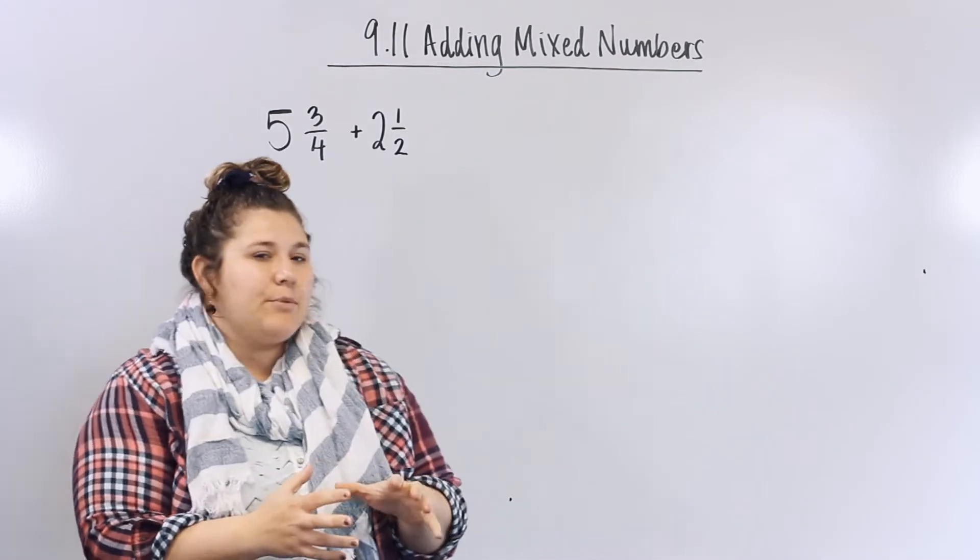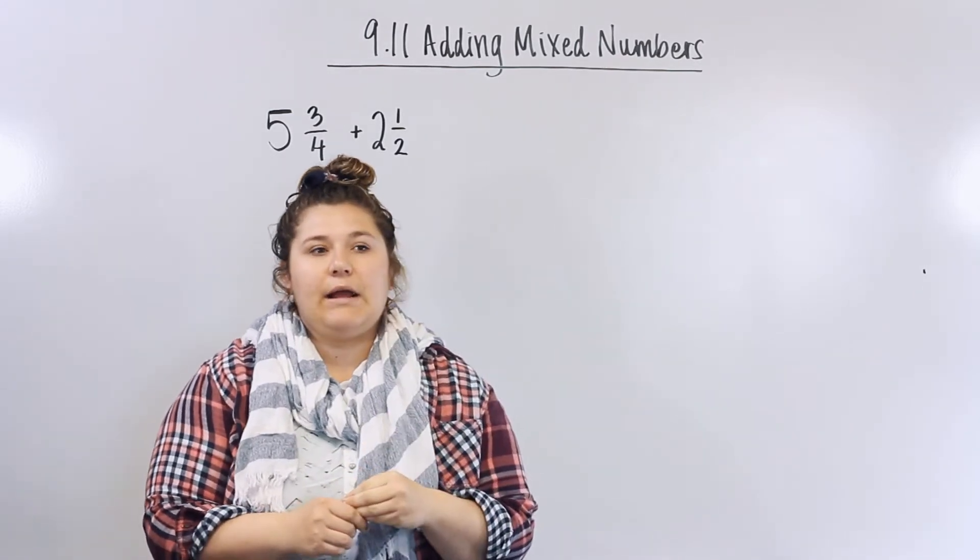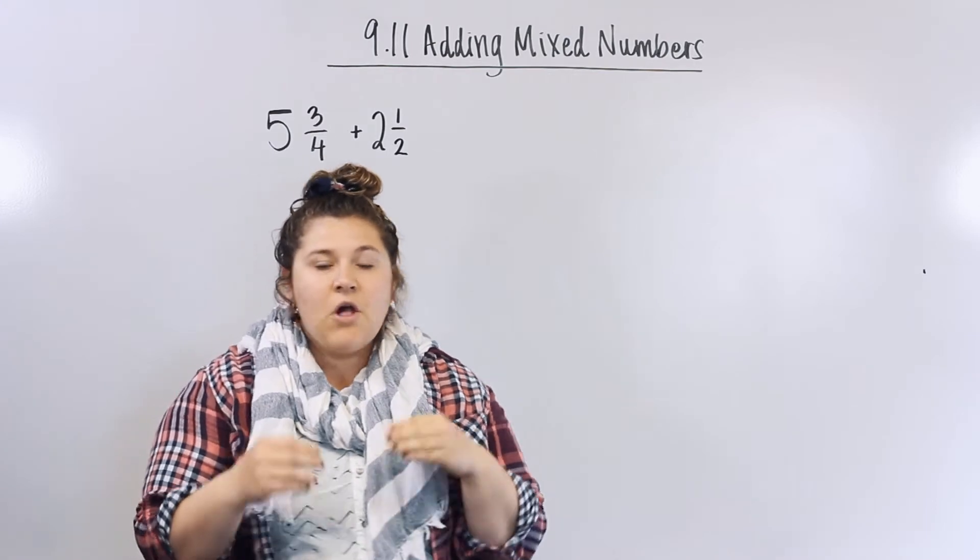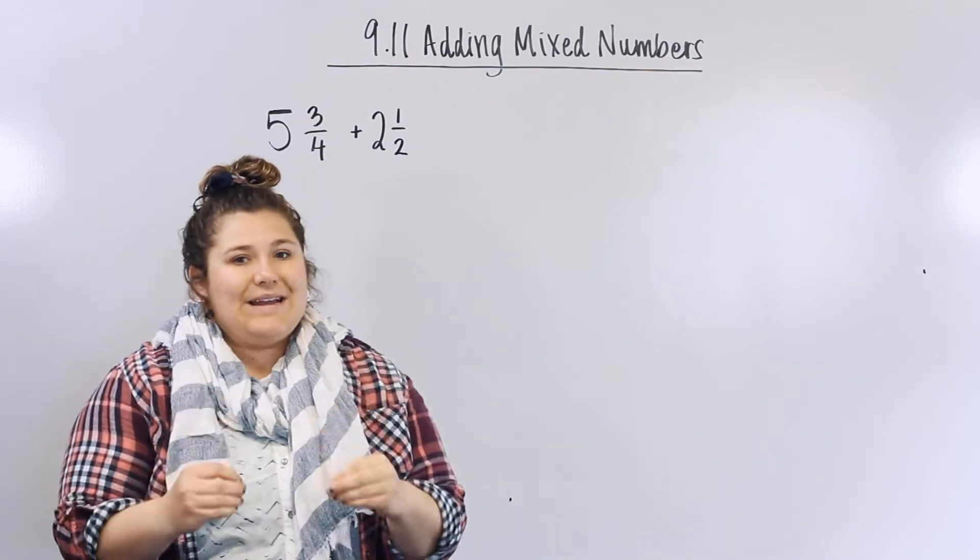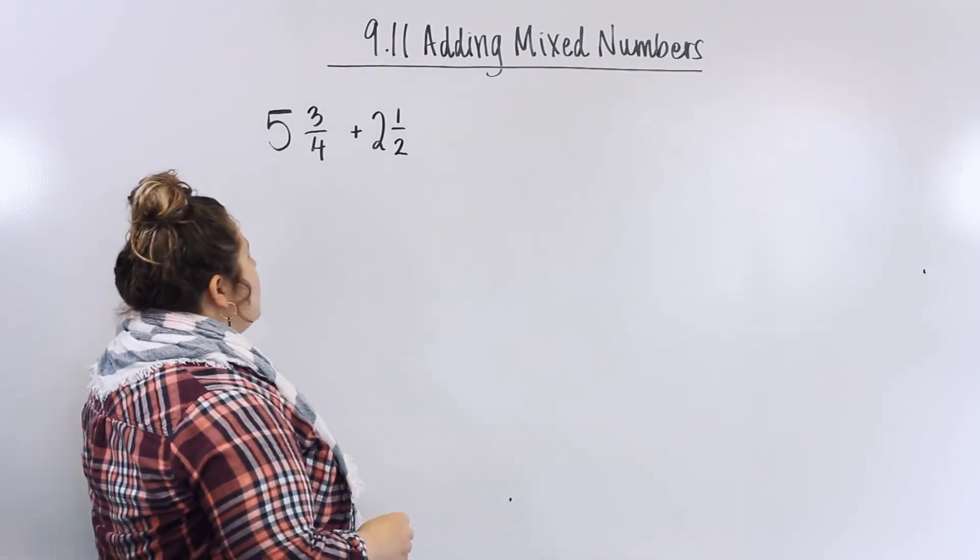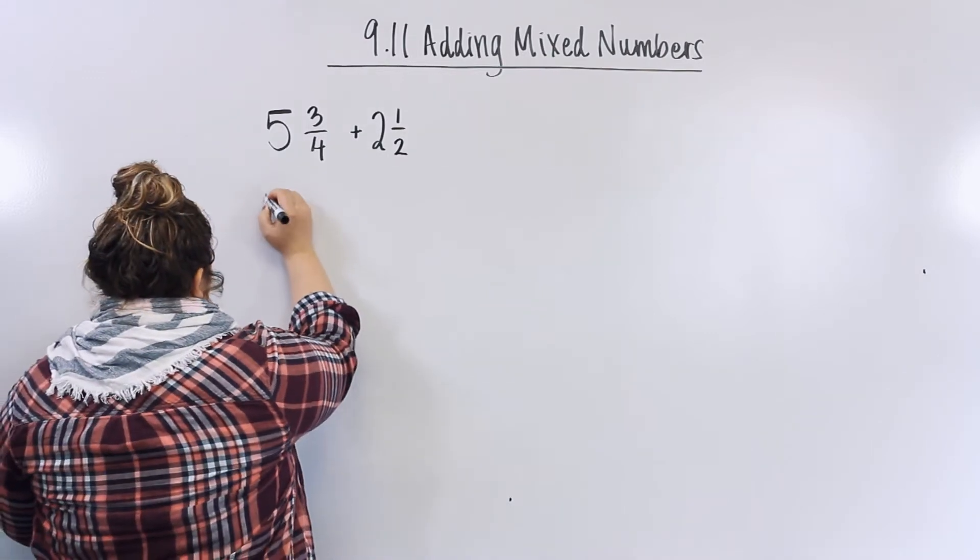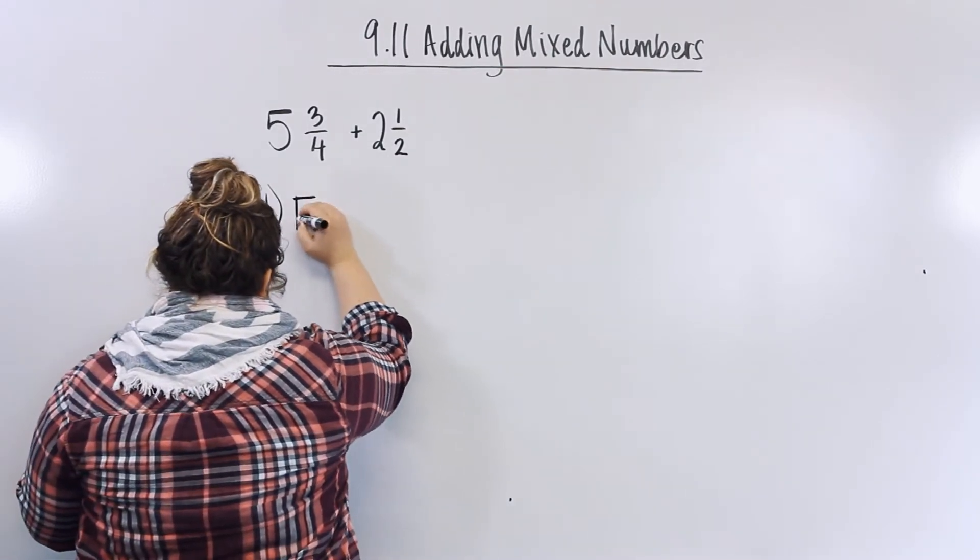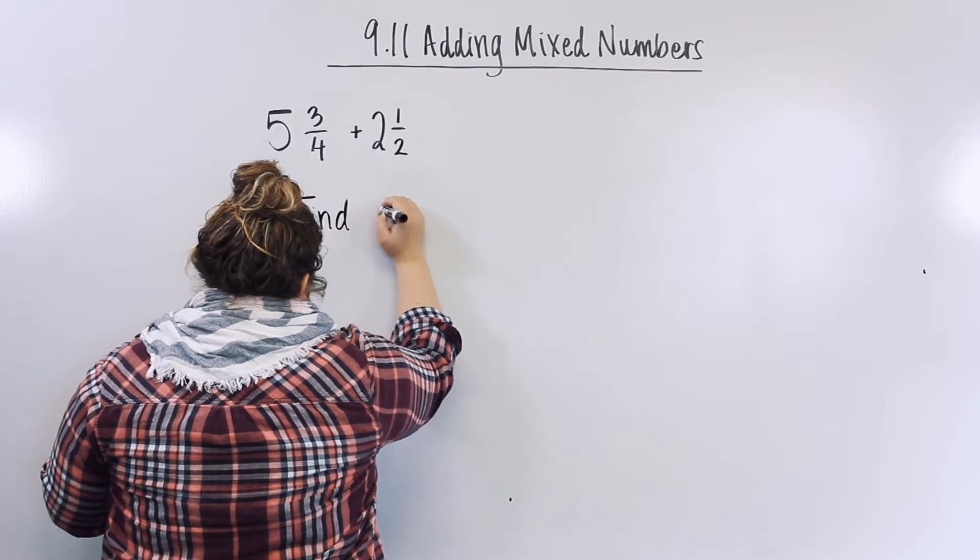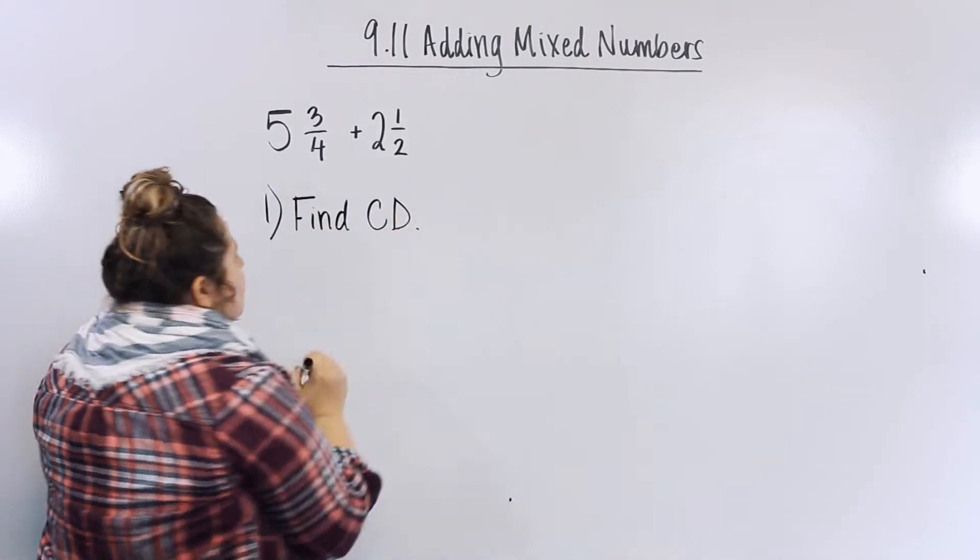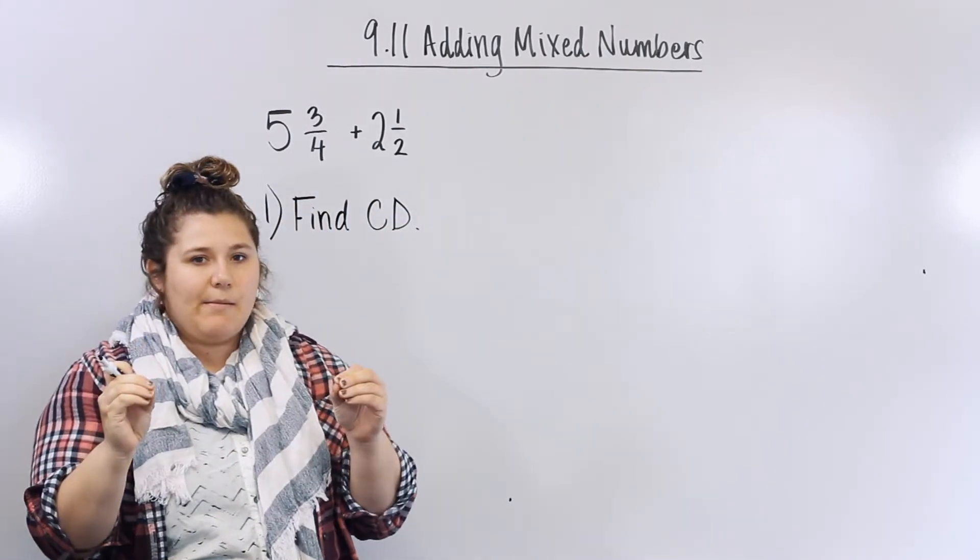All right, so adding mixed numbers is sort of just like adding plain fractions. But first and foremost, we need to find a common denominator. So the first thing we need to do, find common denominator. CD, common denominator.